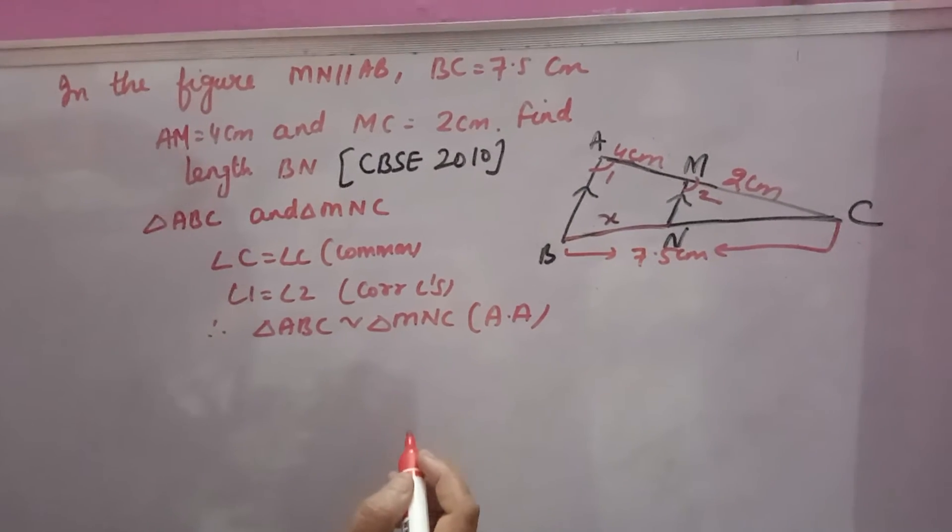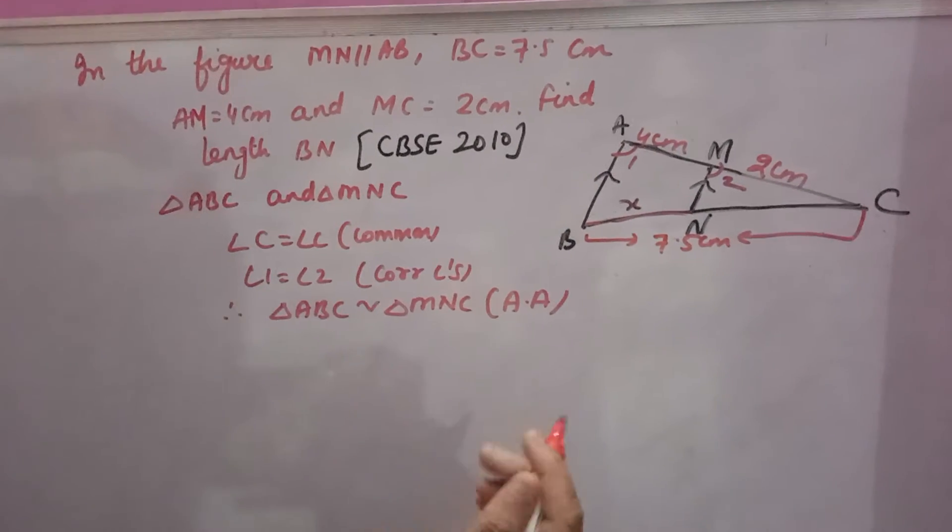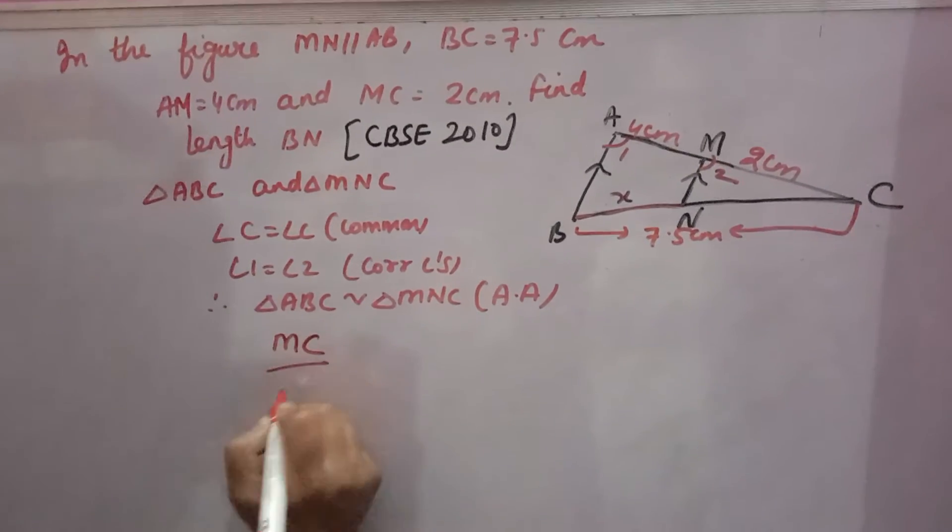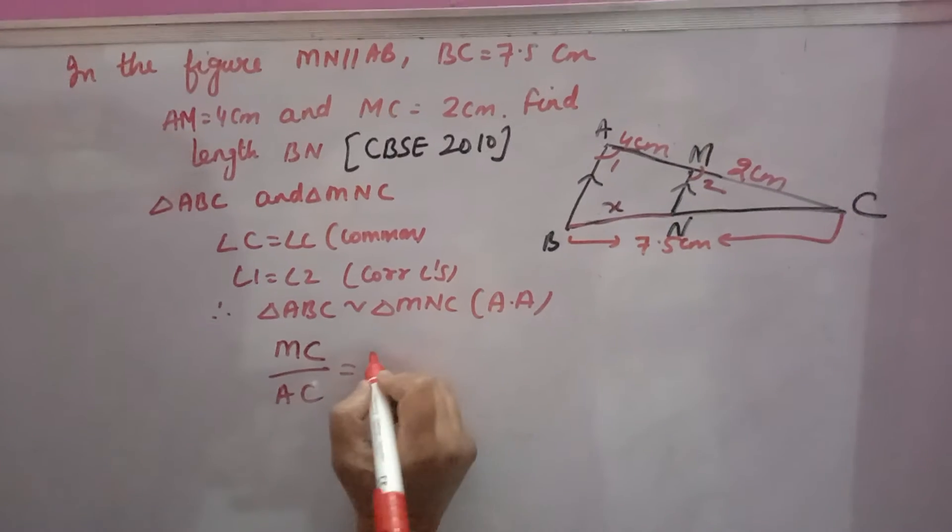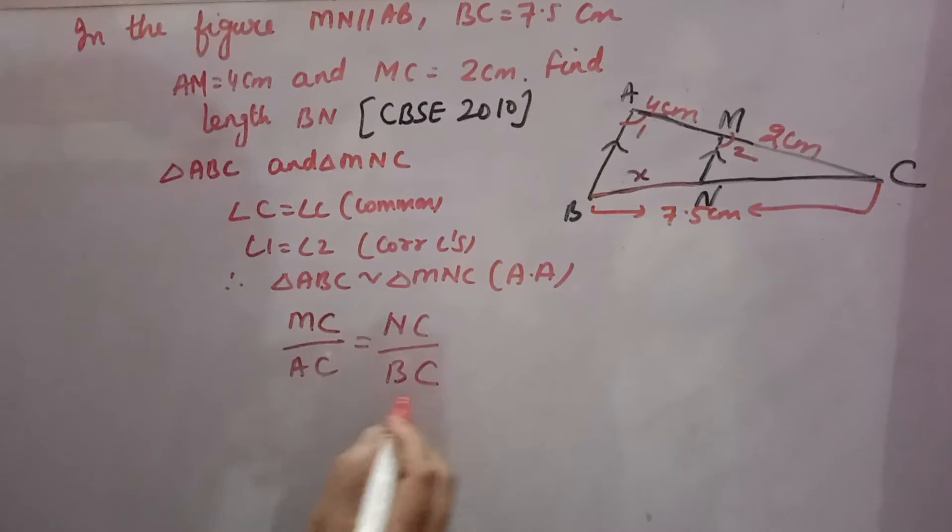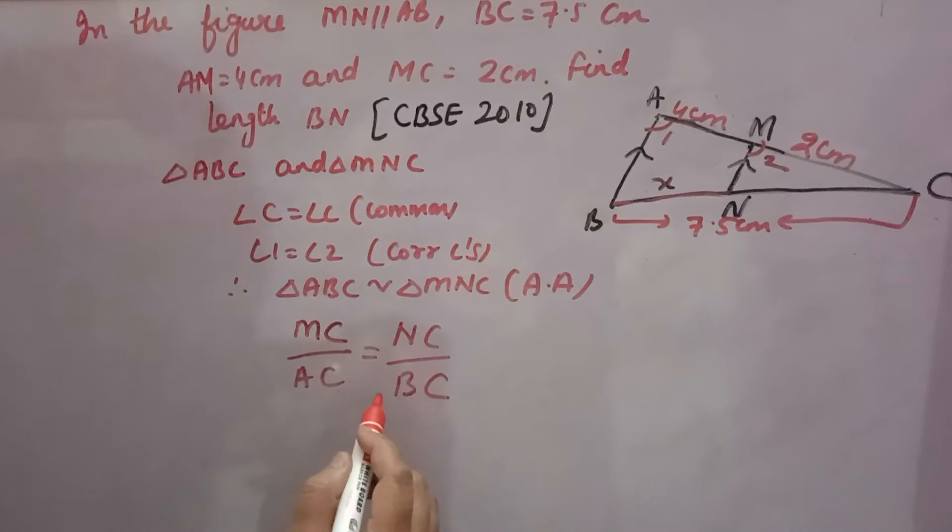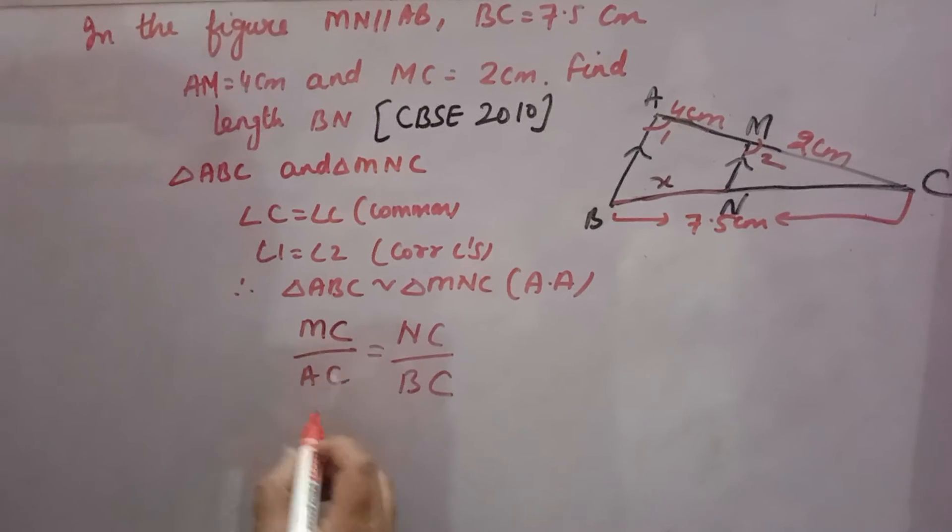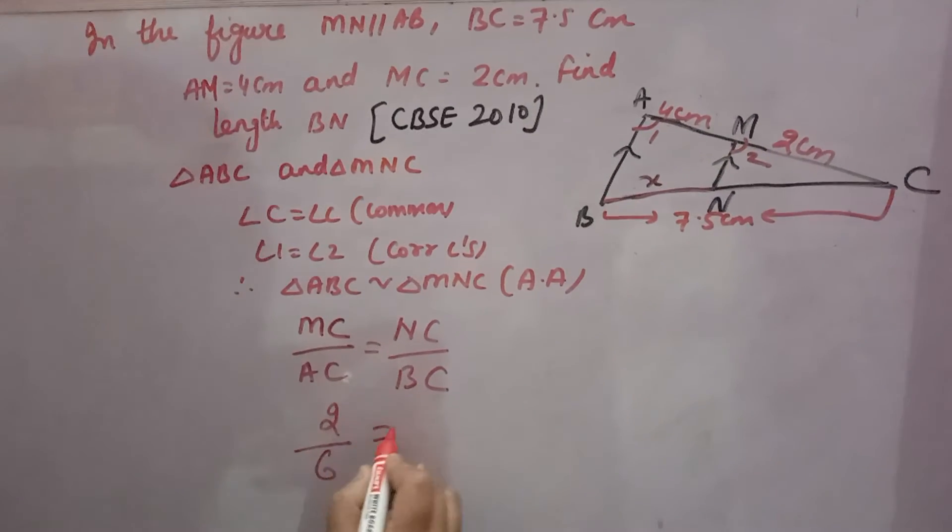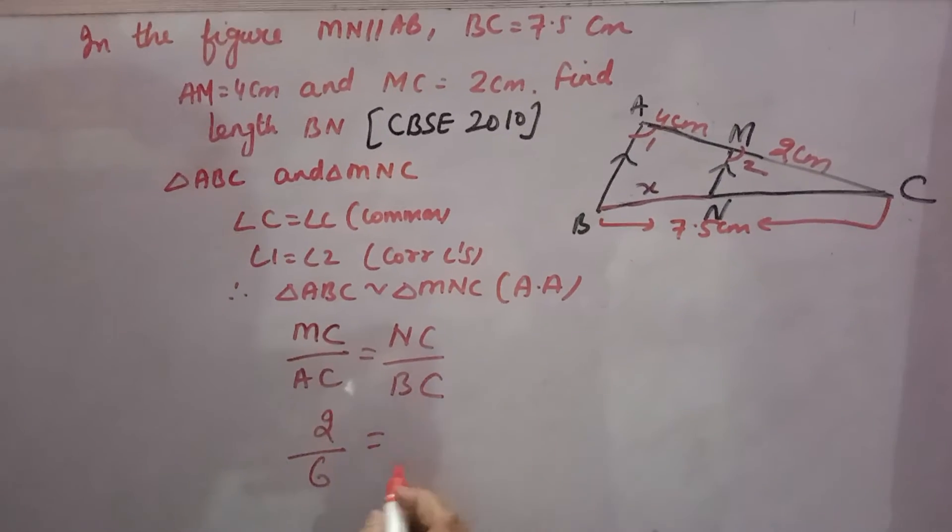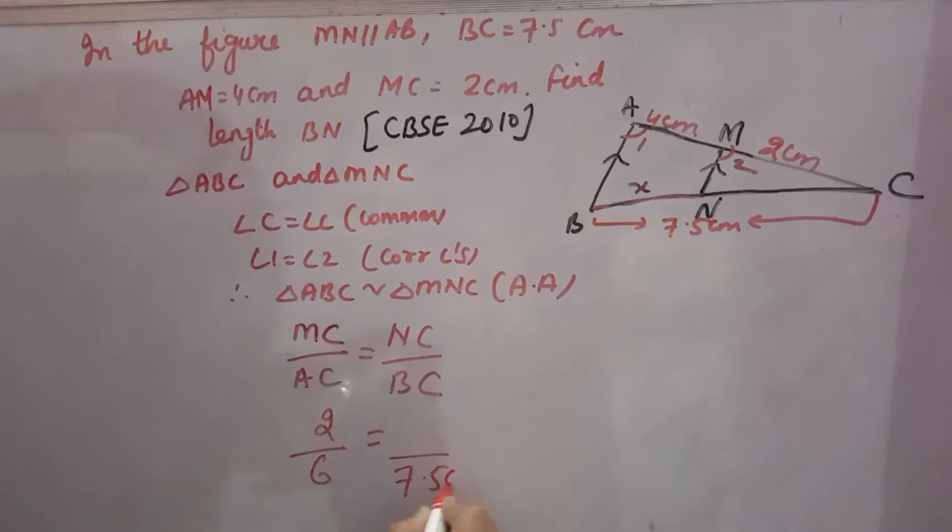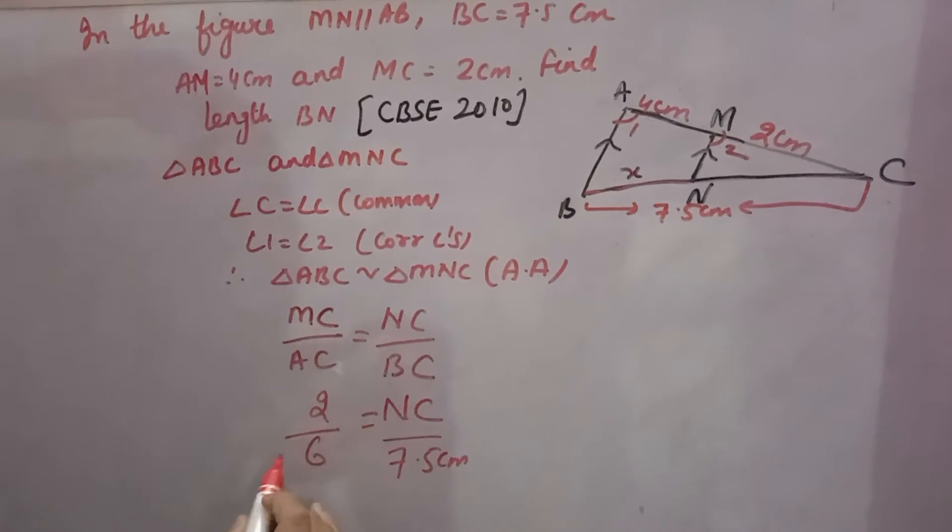Now if triangles are similar, you can write the sides proportional. MC over AC equals NC over BC. MC is given as 2. AC is 4 plus 2, which is 6. NC you don't know, and BC is 7.5 cm. So you can write NC.